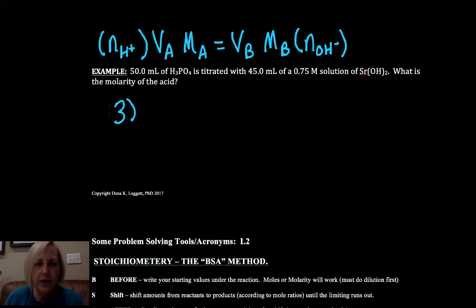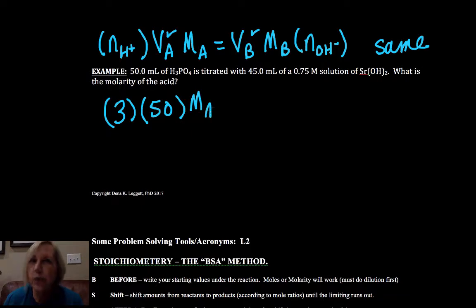If I did it this way, I have three H+ in my H3PO4. My volume of acid is 50. An advantage of this is as long as the volumes are the same on both sides, I don't have to convert to liters. It's kind of like a Boyle's law or a dilution calculation. So my volume of base was 45, my molarity of base is 0.75, my moles of hydroxide is 2.